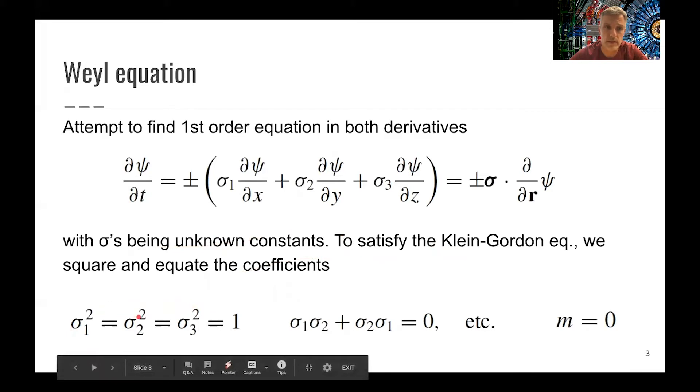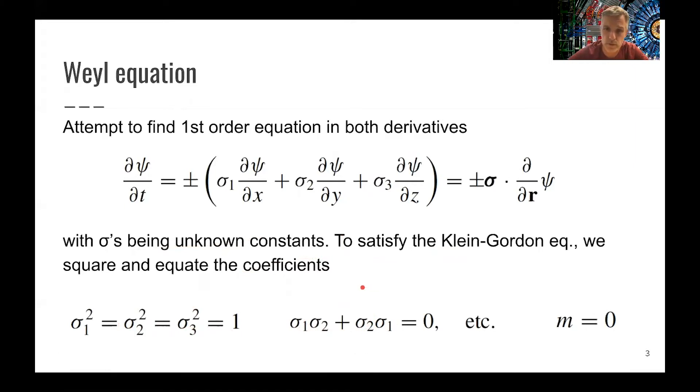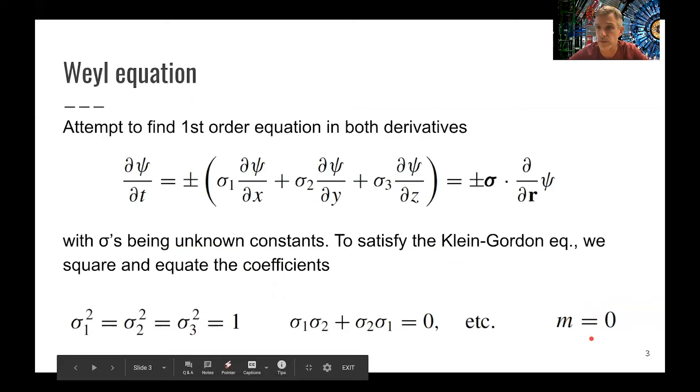So the sigma squared are all the same and equal to 1. But you also see that the sigmas anti-commutate, which is not possible for numbers. So the sigmas need to be matrices. You also see that this is only holding true here for m equals to 0.